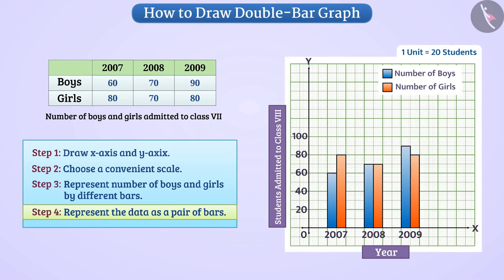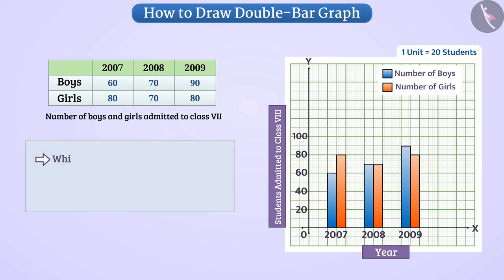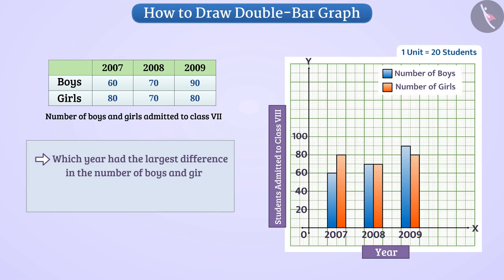Now if we want to find out which year had the largest difference in the number of boys and girls, then by looking at the lengths of the bars, we can easily tell that the difference in number of boys and girls was largest in 2007. Similarly, we can also get different information from the graph.